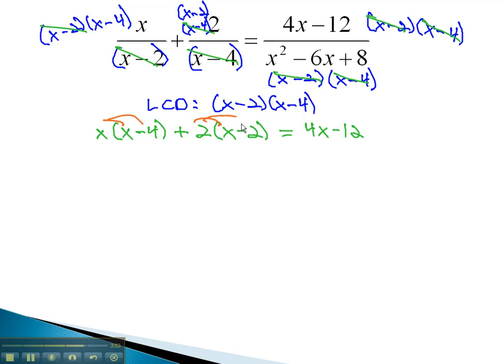Again, we'll start by distributing, giving us x squared minus 4x plus 2x minus 4 equals 4x minus 12. Moving everything, or combining like terms first, we get x squared minus 2x minus 4 equals 4x minus 12.